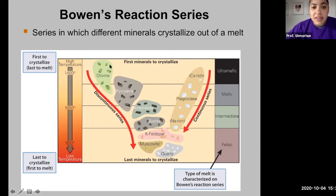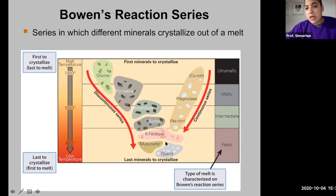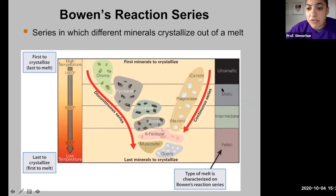The minerals that cool at higher temperatures are what we call the more mafic minerals. Mafic essentially means that it contains less silica, so less SiO2. The minerals that crystallize at lower temperatures are the more felsic minerals, which means they contain more silica. Mafic minerals contain silica somewhere around 30 to 38 percent, whereas felsic minerals contain silica contents anywhere from 70 to 100 percent.